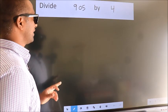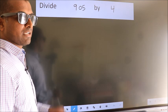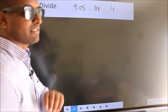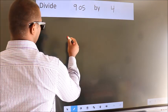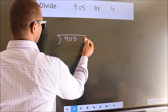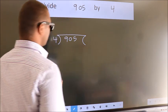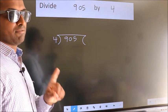Divide 905 by 4. To do this division, we should frame it in this way. 905 here, 4 here. This is your step 1.